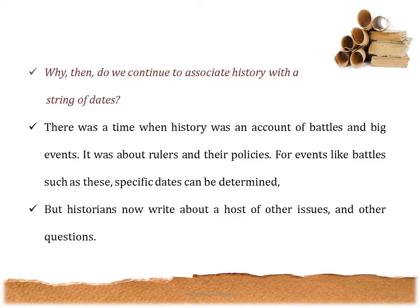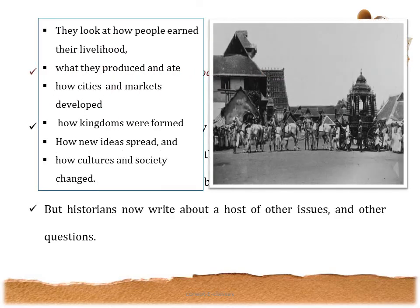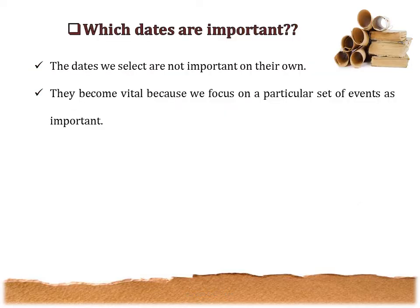But historians nowadays write about a host of other issues and questions — like how people earned their livelihood, how they produced and ate, how cities and markets developed, how kingdoms were formed, how new ideas spread, and how culture and societies changed. So we see that dates are important in history, but modern historians focus on much broader themes.